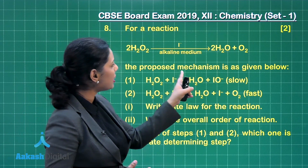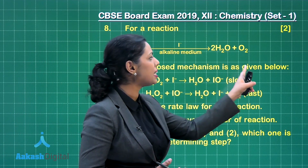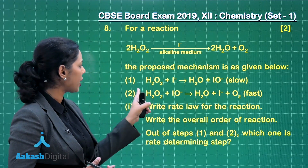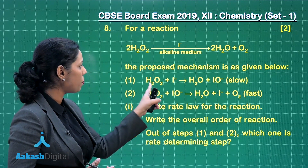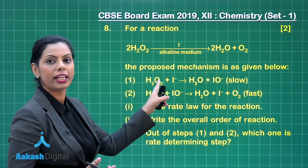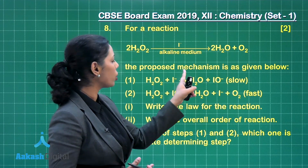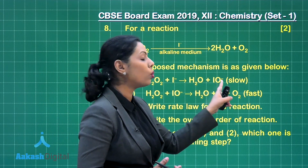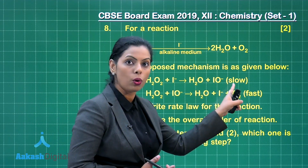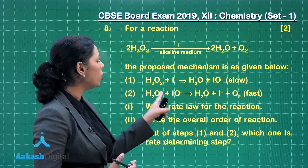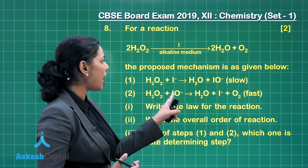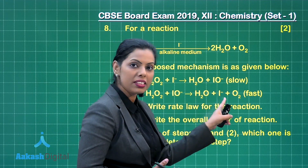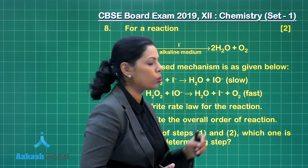The proposed mechanism is as given below. In the first step, H₂O₂ combines with iodide ion to give H₂O and IO⁻. This is the slow step. Further, H₂O₂ combines with IO⁻ to give H₂O, I⁻ ion, and O₂.